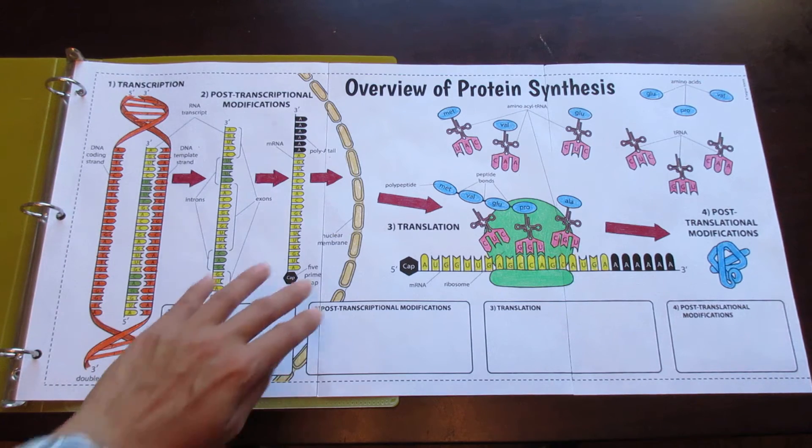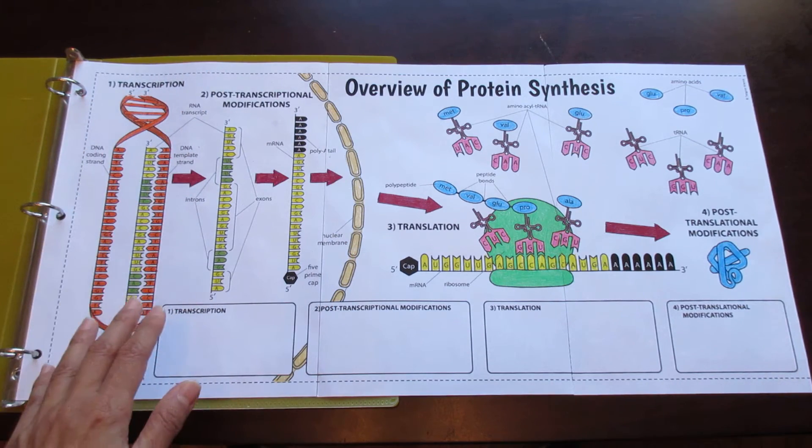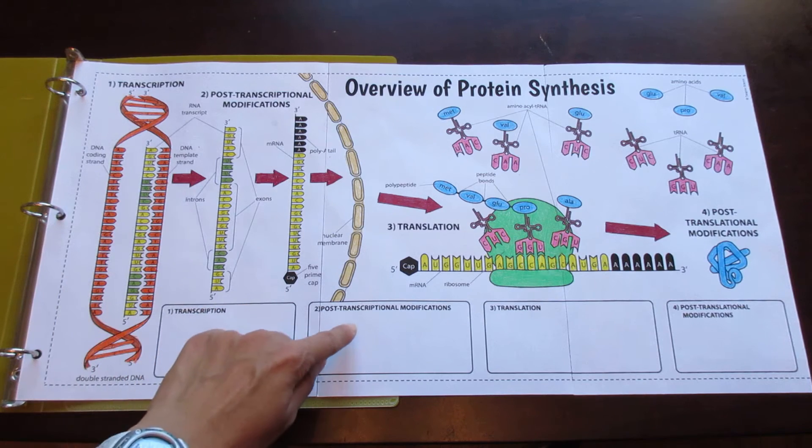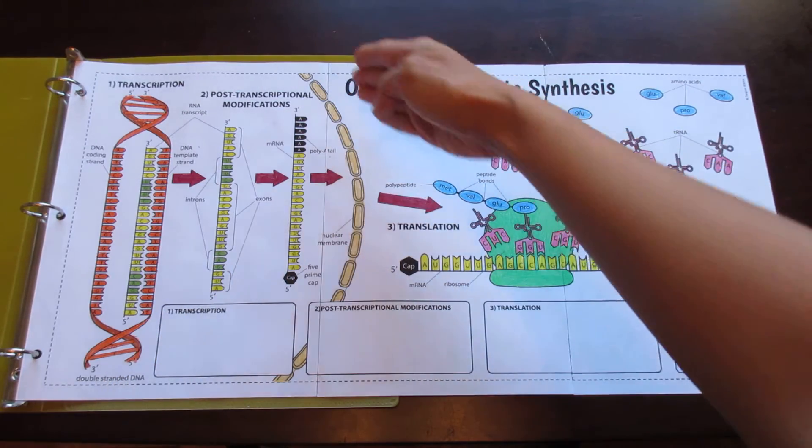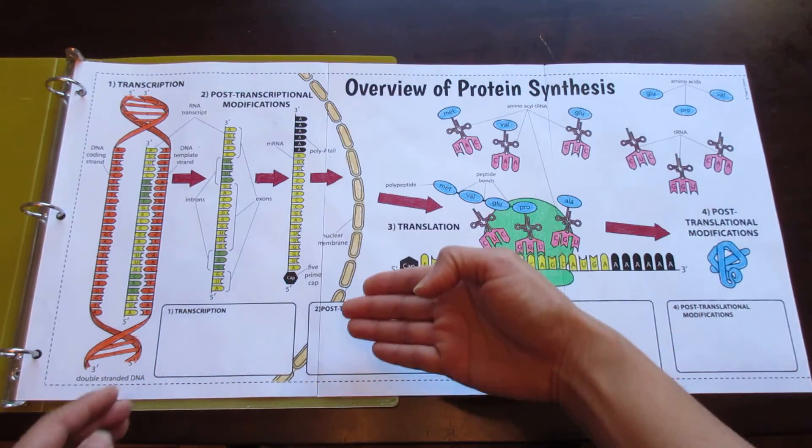There's transcription, which is shown in the nucleus right here. Then there's post-transcriptional modifications, that's stage 2, which is also shown in the nucleus. And the nucleus is delineated from the cytoplasm by the nuclear membrane.